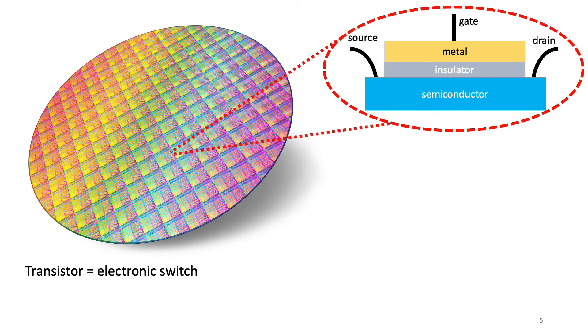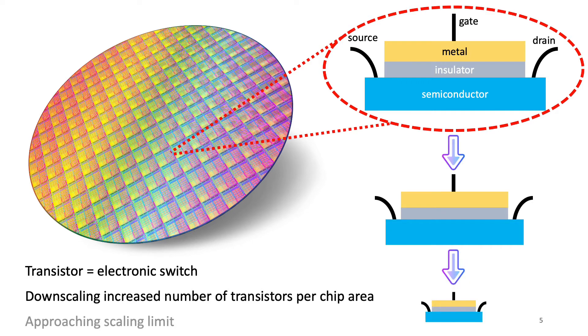It is a switch because it has two states. It can conduct electricity between the two sides of the device, which are called source and drain, if there is voltage applied to the gate electrode and it does not conduct if there is no voltage. These two states basically represent the 0 and 1 binary states in digital computing.